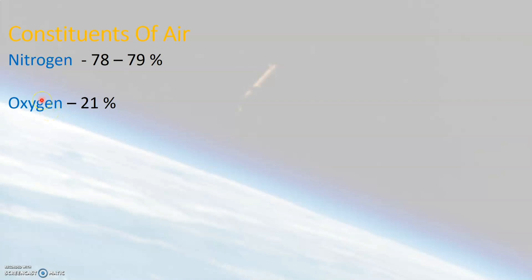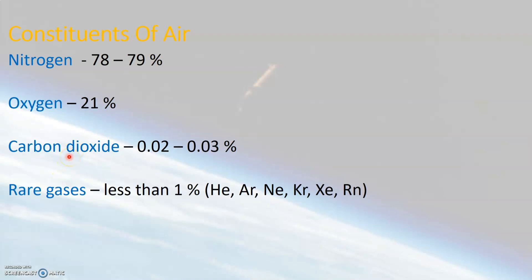In addition to nitrogen and oxygen, there are other gases also present in air. Gases like carbon dioxide and rare gases are present in very small quantities. Carbon dioxide is approximately 0.02 to 0.03% of air. Noble gases like helium, neon, argon, krypton, xenon, and radon constitute a very small amount, with their presence in air being nearly less than 1%. The main noble gas present in air is argon.